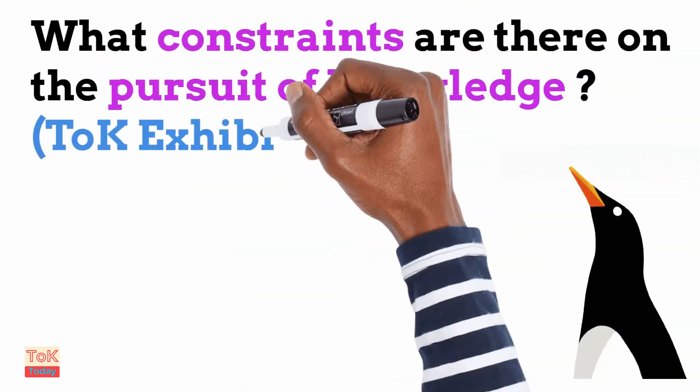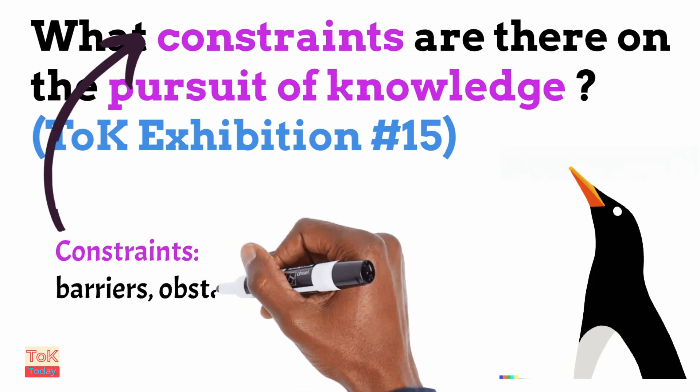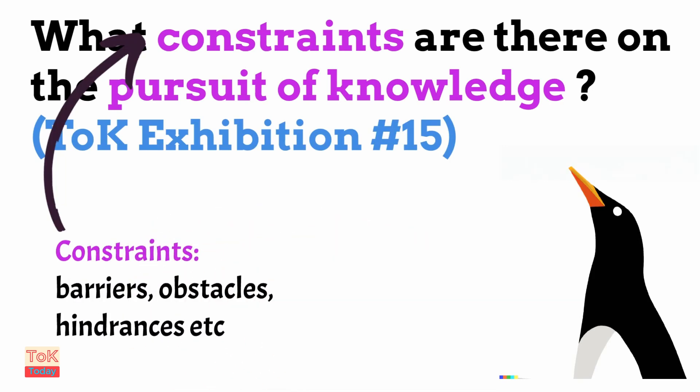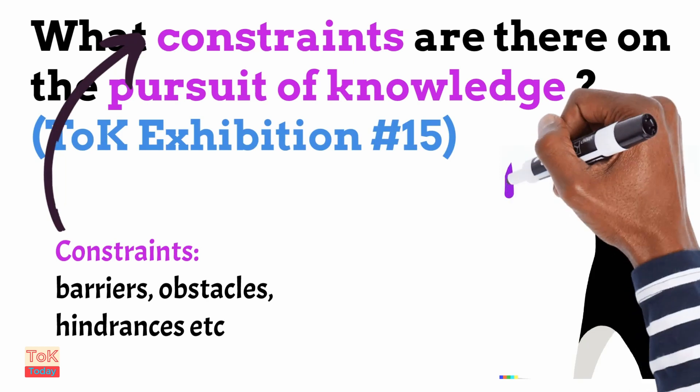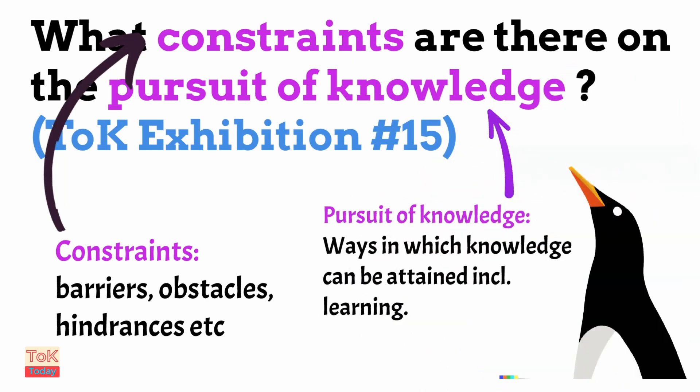So, what constraints are there on the pursuit of knowledge? This is TOK exhibition prompt number 15. It's useful to look at the key terms in this prompt. The first key term is 'constraints' — we tend to think of these as barriers, obstacles, or hindrances to the pursuit of knowledge. The 'pursuit of knowledge' refers to the ways in which knowledge can be attained, including learning.